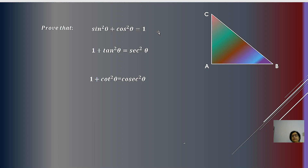All these trigonometric functions and ratios are based on a right-angled triangle. Here we have a right-angled triangle, right-angled at A, where AC is the perpendicular, AB is the base, and BC is the hypotenuse. We apply the Pythagoras theorem: P² + B² = H². The square on the perpendicular plus the square on the base equals the square on the hypotenuse, which is the side opposite the 90-degree angle.